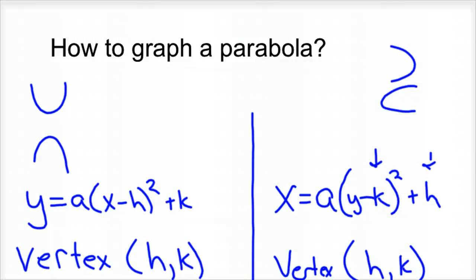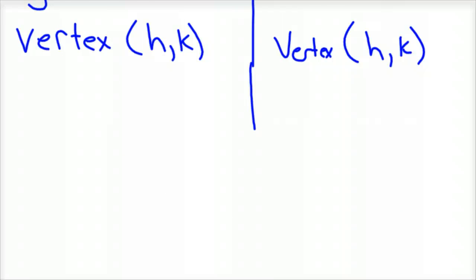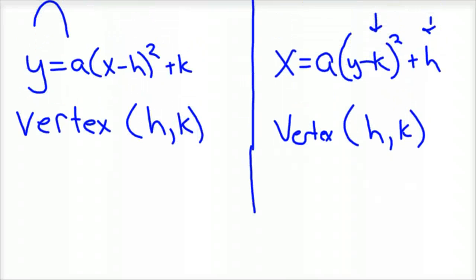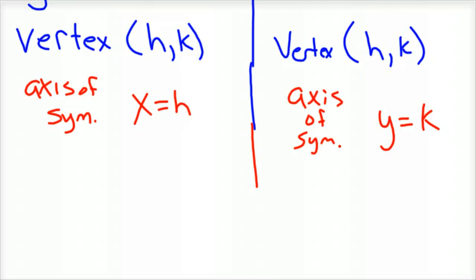Let's go back to our graph now that we've seen some of that terminology. Based on our equation, we know our vertex is h, k. Our axis of symmetry is x equals h. In this case, on the right side, our axis of symmetry is y equals k. I'll hopefully have a chance to give you an example of that in a minute.